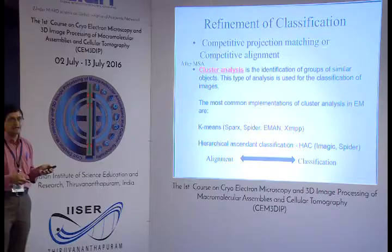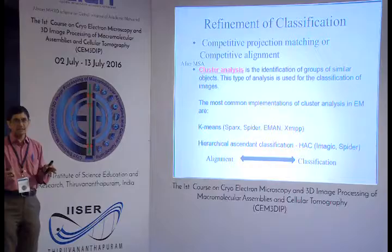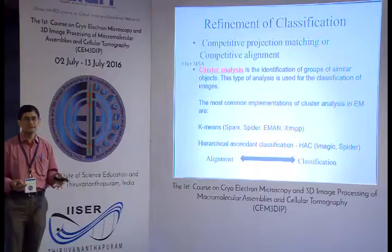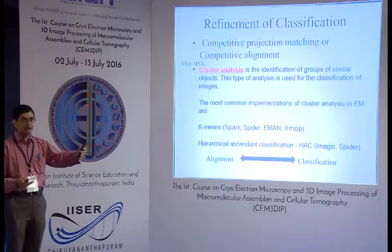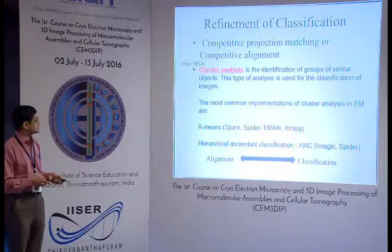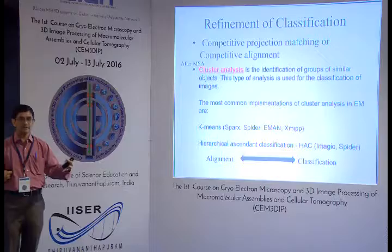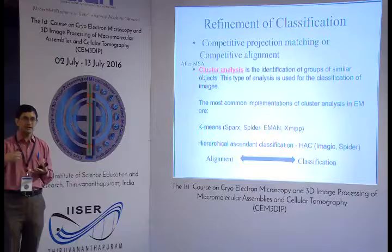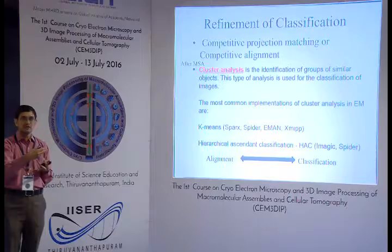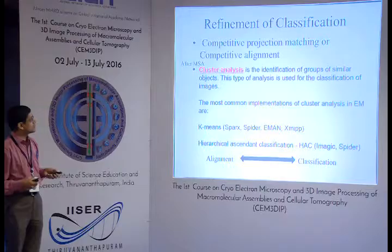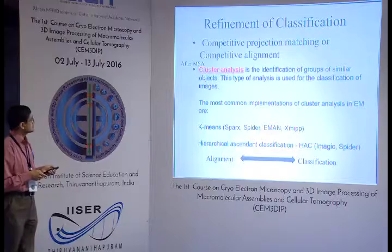Refinement of classification: if you have classified a homogeneous set into three classes, the 3D reconstruction of these three classes can be projected into 108 or 216 references. These class references are used as competitive alignment — for each class you have 108 images as references, and you align particles with all references to see which one has the best correlation. The particle is classified into the class where it gets the highest hit. When this refinement is unstable, particles jump between classes. This is how you do competitive projection matching and refinement of classification.